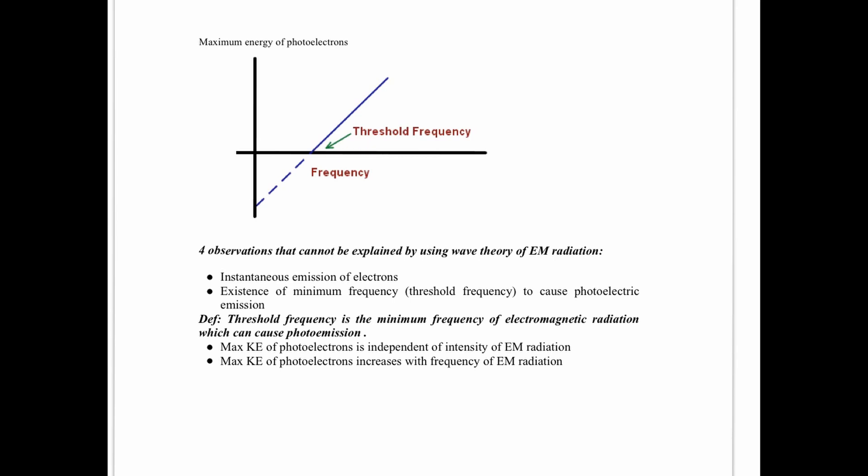Above the threshold frequency, the higher your frequency, the higher your maximum KE. This puzzled scientists — the fourth observation. If you supply more energy to electrons using higher intensity, there's no difference to the maximum KE. But if you supply more energy using higher frequency of EM radiation, you get higher KE. So why does it depend on frequency and not intensity? Because in both cases we are supplying more energy.